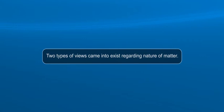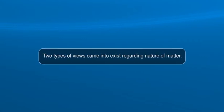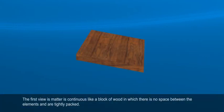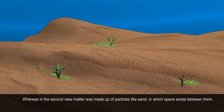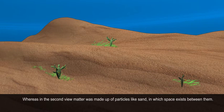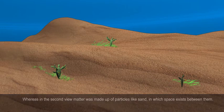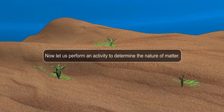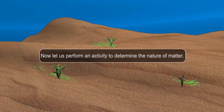Two types of views came into existence regarding nature of matter. The first view is, matter is continuous like a block of wood in which there is no space between the elements and are tightly packed. Whereas in the second view, matter was made up of particles like sand in which space exists between them. Now let us perform an activity to determine the nature of matter.